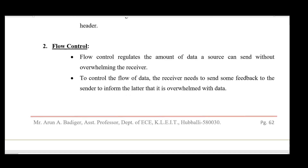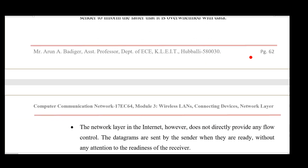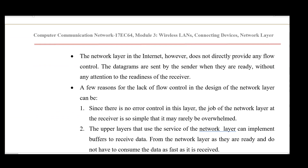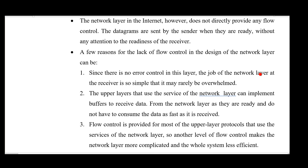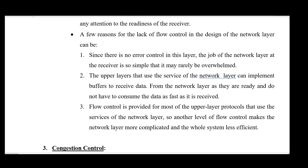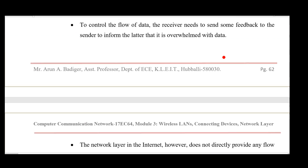Flow control is also expected of the network layer, but it is not implemented here because flow control is a major responsibility of the transport layer. The transport layer handles flow control, so there is no need to add extra burden to the network layer. Since error control is already done at the data link layer and transport layer, adding it again at the network layer would create unnecessary overhead.